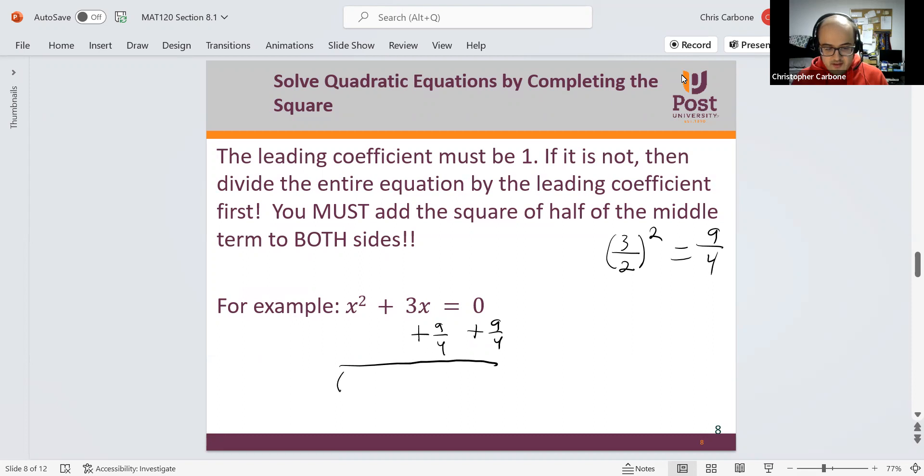So we have x squared plus 3x plus 9 fourths equals 9 fourths. We can then factor the left side, this would just be x plus 3 halves squared equals 9 over 4.